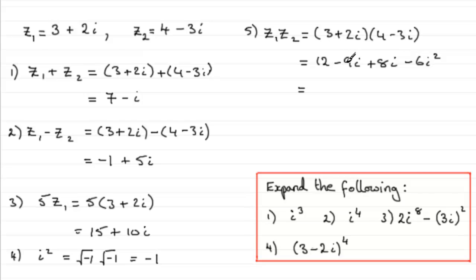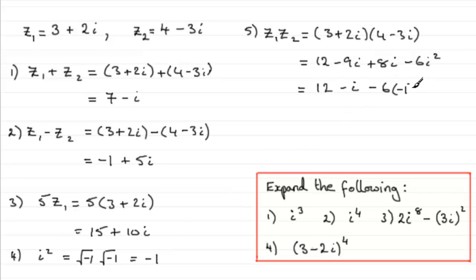Now we can group together the minus 9i and the plus 8i — that's going to be minus i. So we've got 12 minus i, and then we've got minus 6 times i². But i squared we just worked out is minus 1. So we've got 12 plus 6, which is clearly going to be 18, and then minus i. So the answer is 18 minus i.